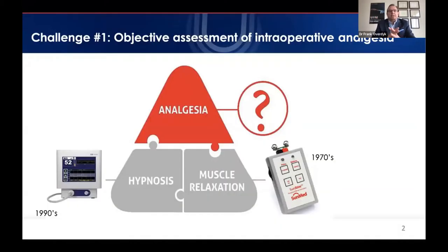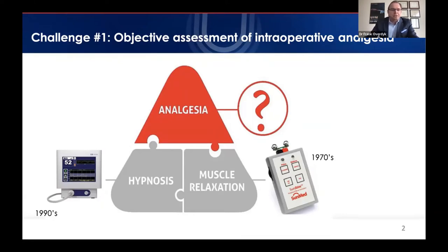Our job as anesthesiologists is to take care of three domains of general anesthesia: analgesia, hypnosis, and muscle relaxation. The first domain to get an objective monitor was muscle relaxation in the 1970s, developed by Hassan Ali and colleagues in Boston. Then in the 1990s, we got the depth of anesthesia monitor. The BIS monitor, also developed in Boston, is now widely appreciated as a useful adjunct in special cases.